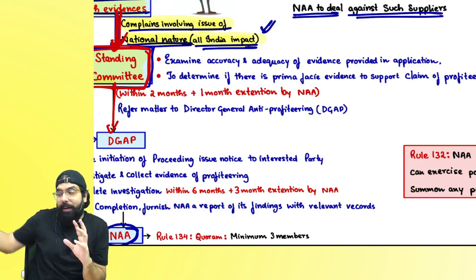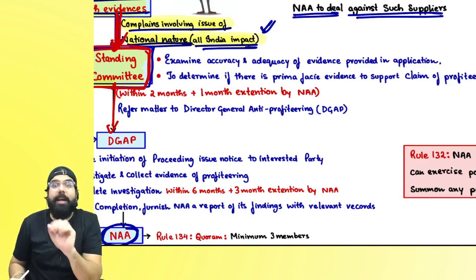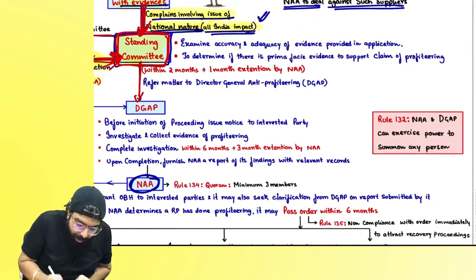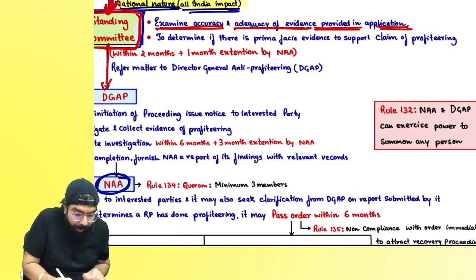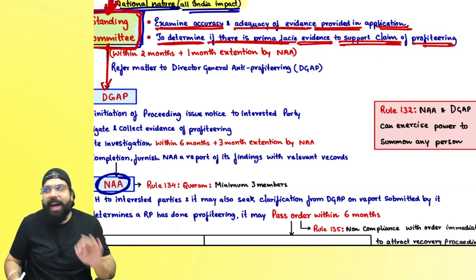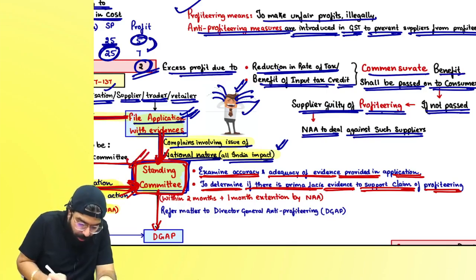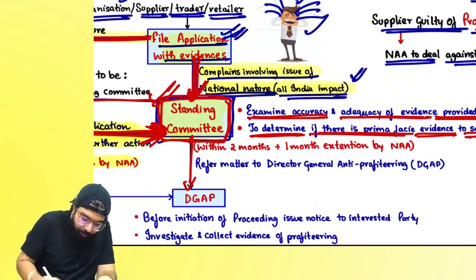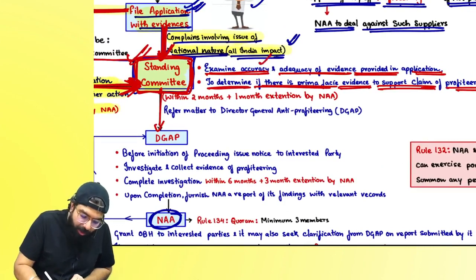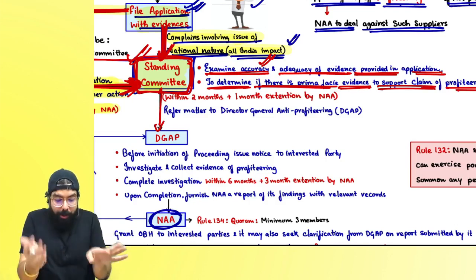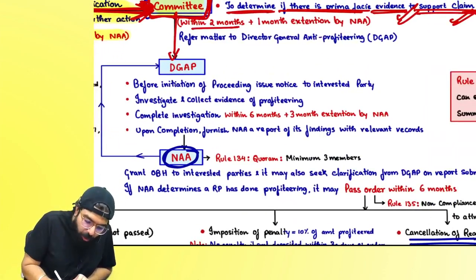The standing committee will review direct applications and again screen them — they will go ahead and examine the accuracy and adequacy of the evidence provided in the application, to determine if there is prima facie evidence to support the claim of profiteering — whether profiteering is actually happening or not. The standing committee will check and, if there is prima facie evidence, within two months plus one month extension they will send it to whom?